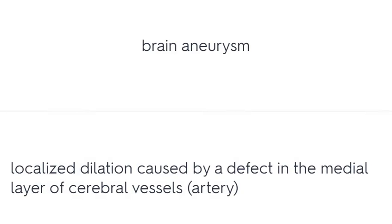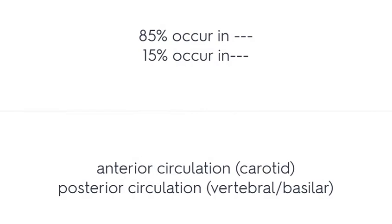A brain aneurysm is a localized dilation caused by a defect in the medial layer of cerebral vessels. 85% occur in the anterior circulation and 15% occur in the posterior circulation.